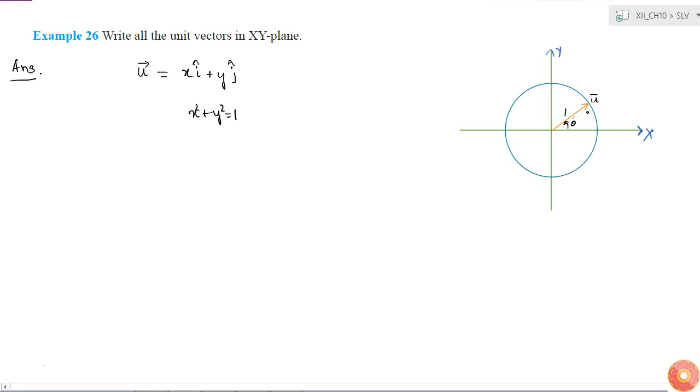I can drop a perpendicular from u to the x-axis. This is always possible. So in this right triangle, what will be the value of this length? This length will be u cos theta, and this length will be u sin theta.